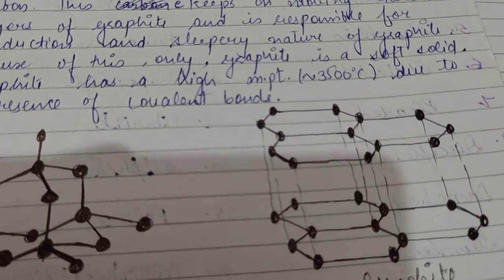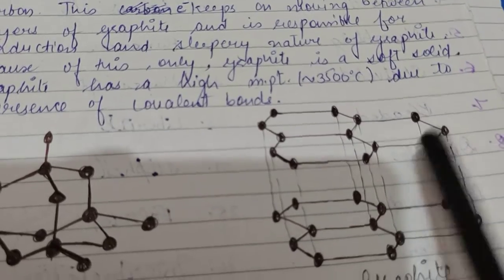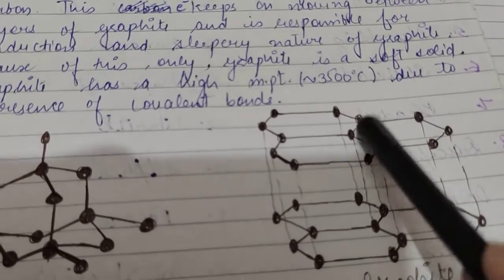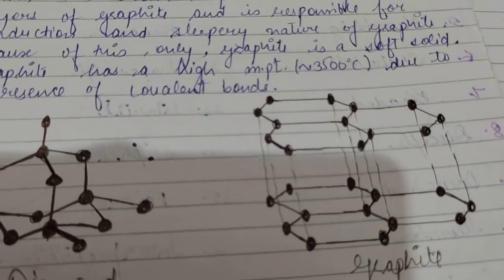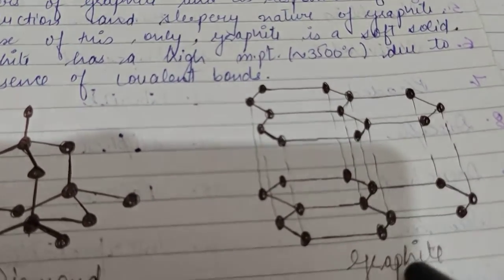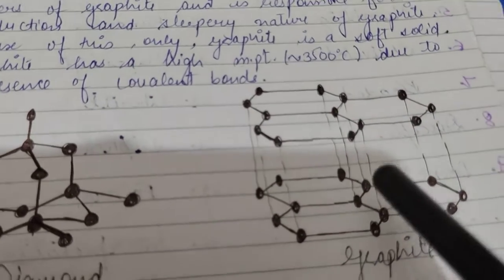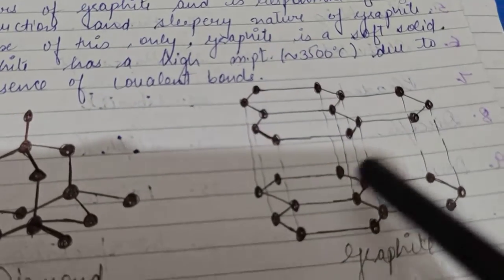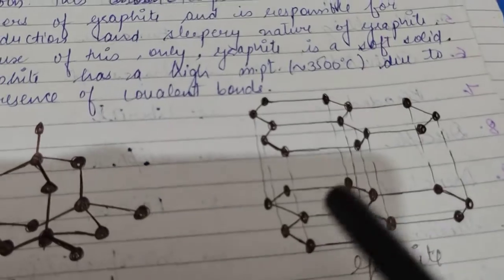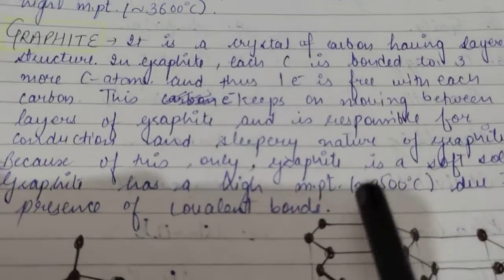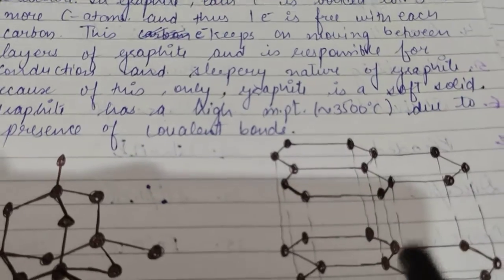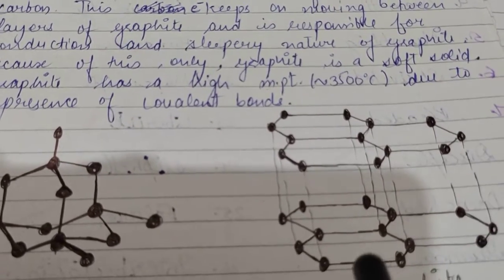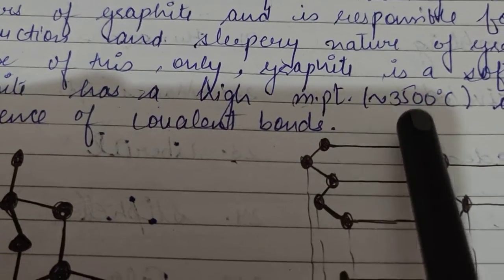Each carbon in graphite has four electrons but uses only three in bond formation, so one electron per carbon is free. These free electrons keep revolving between the sheets of graphite, preventing proper bonding between the sheets. Because of this, the sheets can slip over each other, making graphite soft and slippery. This is why graphite is used as a lubricant. Due to the free electrons, graphite is also a conductor of electricity. Its melting point is as high as 3500°C.